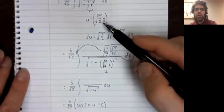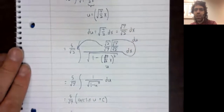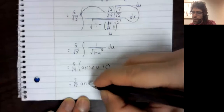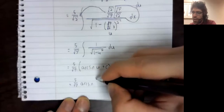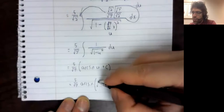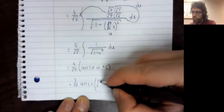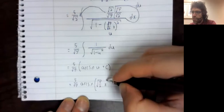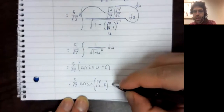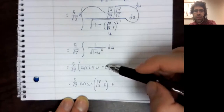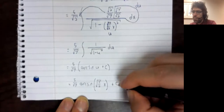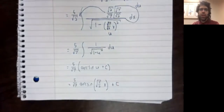U was the square root of seven halves times x. So the final answer is five over the square root of seven times the arc sine of the square root of seven halves times x, plus a constant of integration. A constant of integration times some number is still an arbitrary constant.